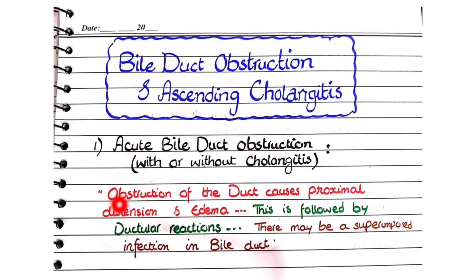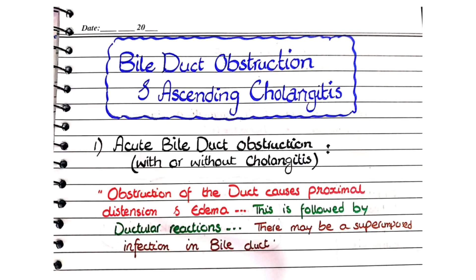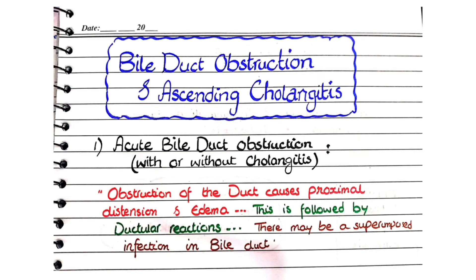For acute bile duct obstruction, the keywords are: obstruction of the duct causes proximal distension and edema. If there is an obstruction in the bile duct, it causes proximal distension of the biliary system, distension of the small bile ductules, and edema. This is followed by ductular reactions, where stem cells in the hepatocytic lobule start to form duct-like structures due to increased bile pressure damaging the bile ductules.